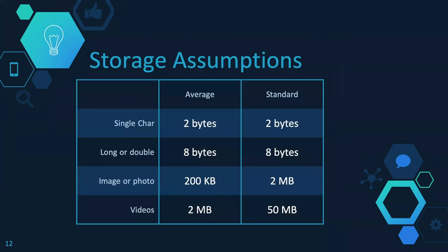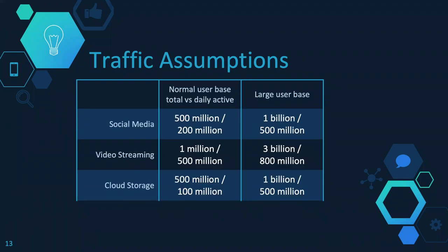Here are some storage assumptions: for a single character, the average byte size is 2 bytes; for a long or double data type, it comes around 8 bytes. For images or photos, the average upload/download size is about 200 KB, but in standard it might go up to 2 MB. For videos, the average size will be about 2 MB but it might go up to a maximum average of 50 MB.